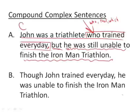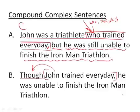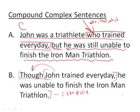Let's look at example B: 'Though John trained every day, he was unable to finish the Ironman triathlon.' Is this a compound complex sentence? We have a subordinating conjunction 'though,' which takes 'John trained every day' and turns it into a dependent clause. That dependent clause needs an independent clause — 'he was unable to finish the Ironman triathlon' — making it a complex sentence. However, we do not have a compound complex sentence because we need to combine a complex sentence with something more. This is simply a complex sentence.